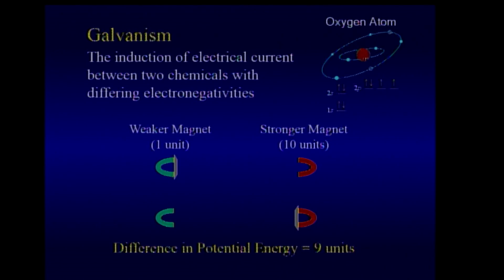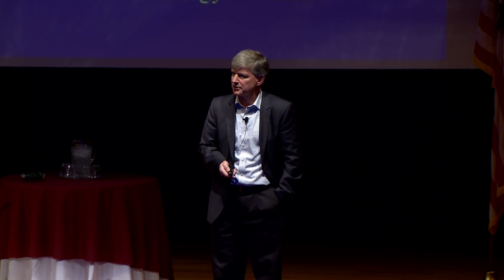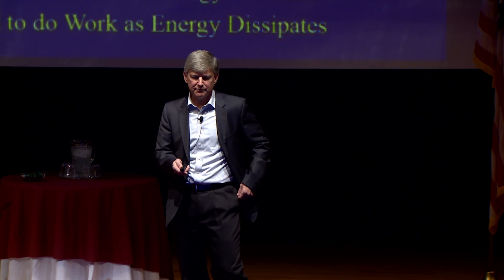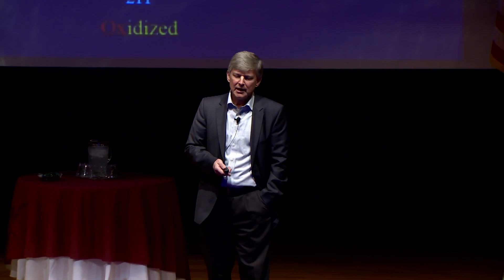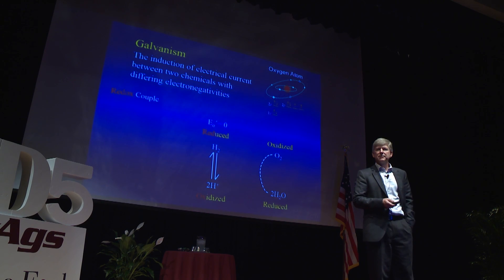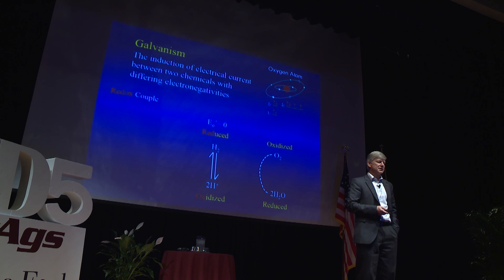If the weaker magnet has the piece of iron attached to it, and we've assigned units to these magnets, then we have a difference in potential energy of nine units. We can do work out of that potential energy difference. With molecules or chemicals, we talk in terms of couples — whether the molecule or atom has the electron associated with it or whether it doesn't. What we want to know as biochemists is, can we assign a number — a magnetic strength — to that molecule? These experiments were done by biochemists in the 1950s.